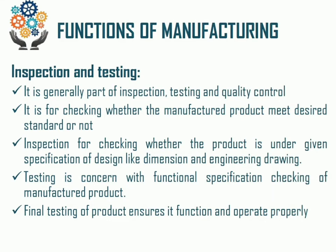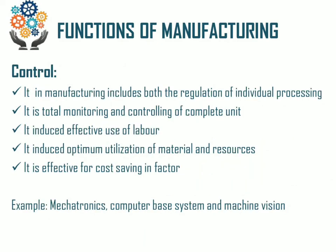The final testing of the product ensures that it functions and operates properly. We need to achieve proper control over all types of manufacturing functions to achieve the highest productivity. This includes monitoring and controlling the complete unit product, inducing effective use of labor, optimum utilization of materials and resources, and effective cost-saving factors. Examples include mechatronics, computer-based systems, and machine vision. Computer Integrated Manufacturing also plays an important role in controlling manufacturing processes. Thank you very much for today's lecture.